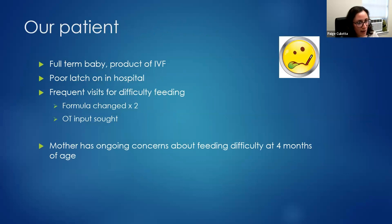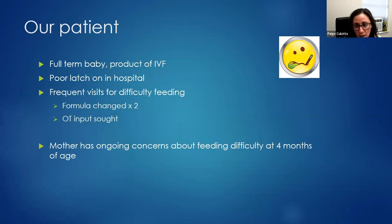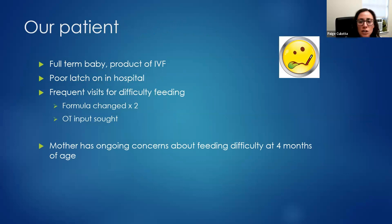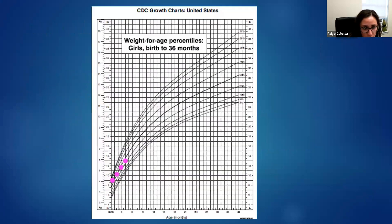I'm going to start with a case example. This was a patient I had during my residency. The child was a full-term baby, a product of IVF — a very desired child of a single mom. She initially had poor latch in the hospital and difficulty with feeding, so she was in the pediatrician's office a lot for weight checks, her formula was changed, and OT was involved to help with feeding. Despite all these interventions, mom still had a lot of concerns. Looking at her growth chart through about four months of age, her growth actually looks pretty good despite the history we'd been given.